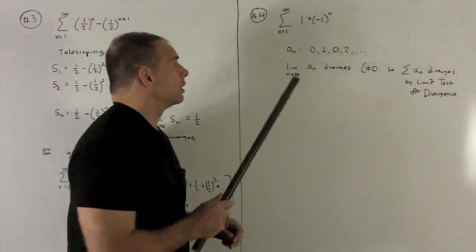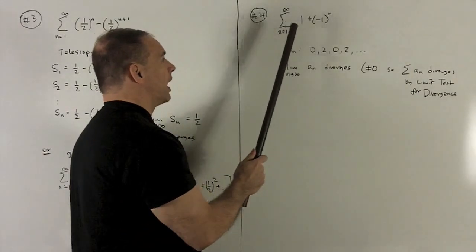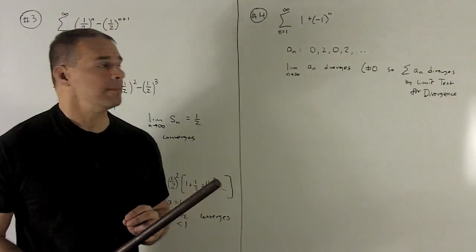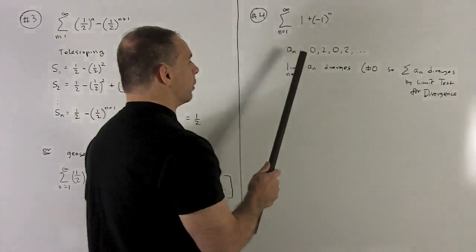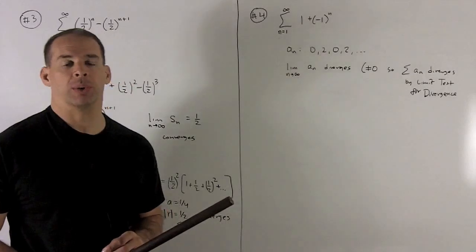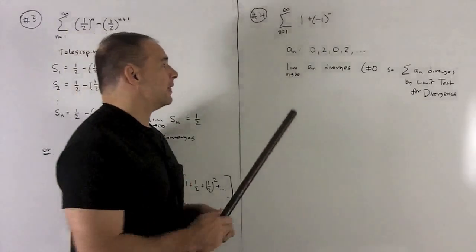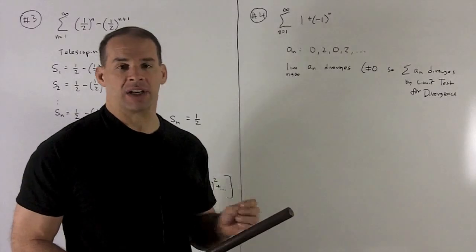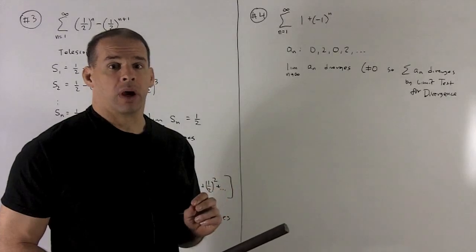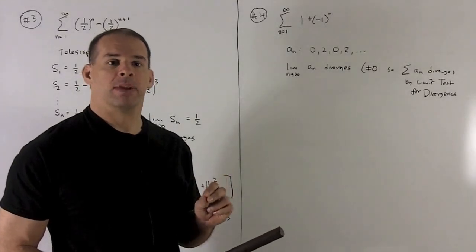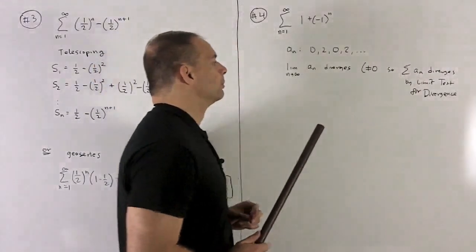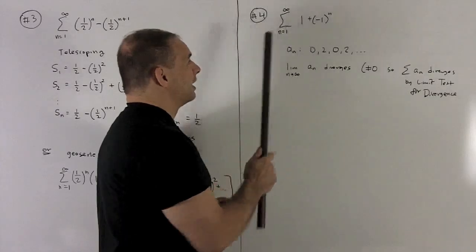Number four, take the sum from one to infinity of 1 + (-1)^n. So in this case, let's see if we could simplify our a_n. If n is equal to one, we're going to get zero. If n is equal to two, I get two, and then we know it's just going to bounce back and forth between zero and two. Well, that's a problem because that means the limit of a_n diverges. It's not going to settle on any value as we let n get large without bound. So our limit test for divergence says if your limit of your sequence is not equal to zero, then your series is going to have to diverge. So, this series diverges.